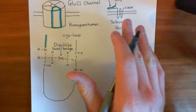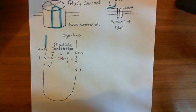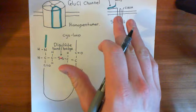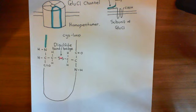Now that we understand what the cis-loop is and why these channels are called cis-loop ligand-gated ion channels, we'll discuss in the next video how the five receptor subunits assemble into a pentamer and the overall structure of the complete channel.